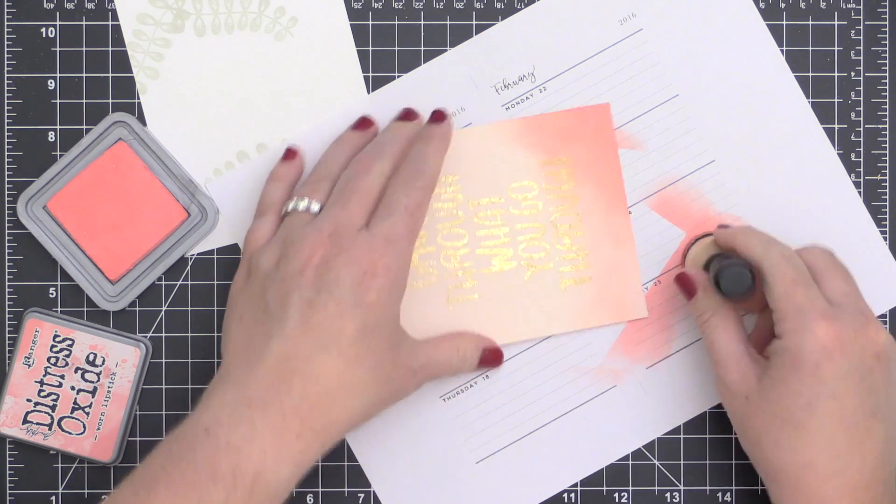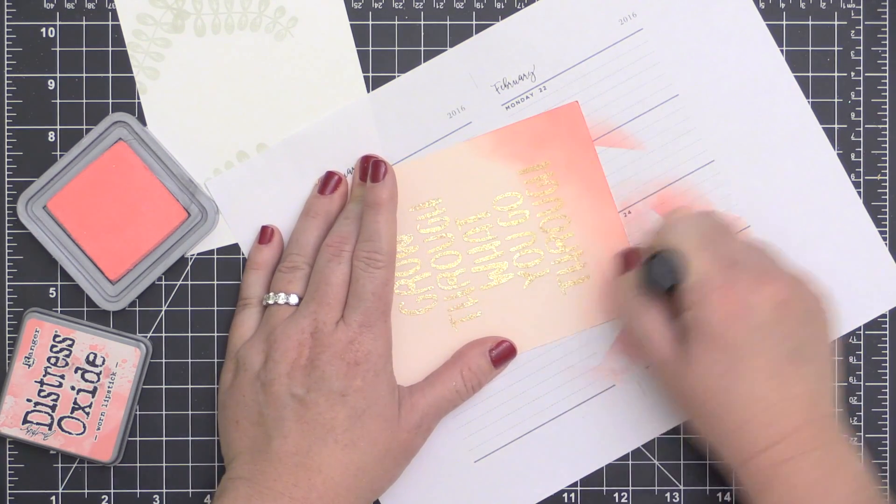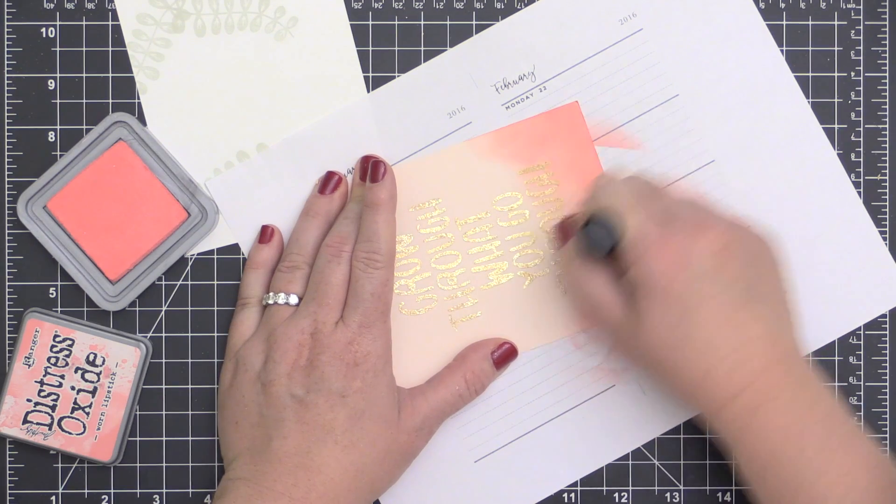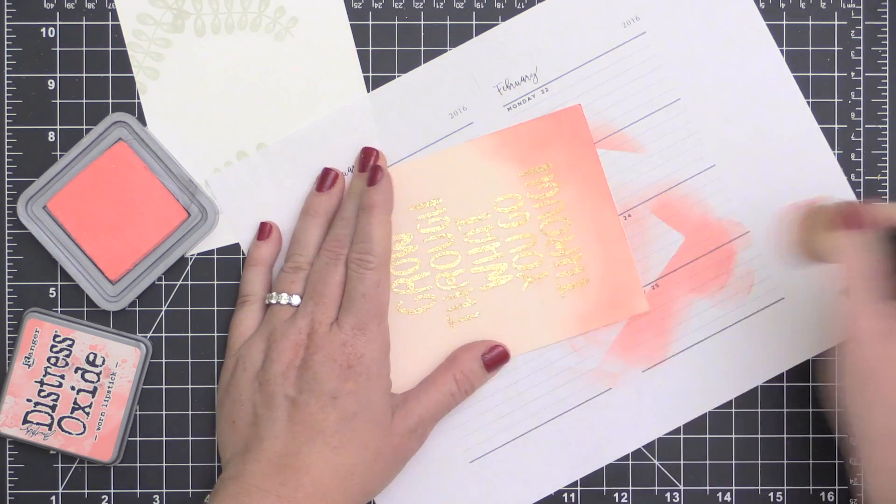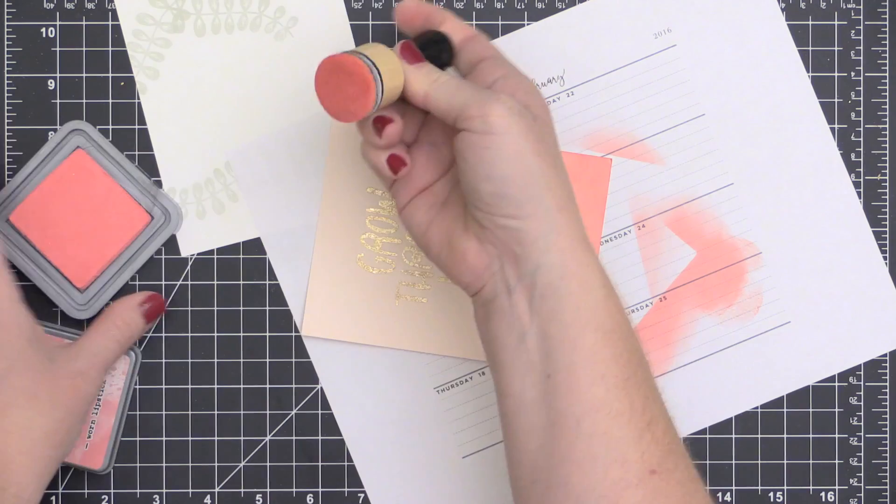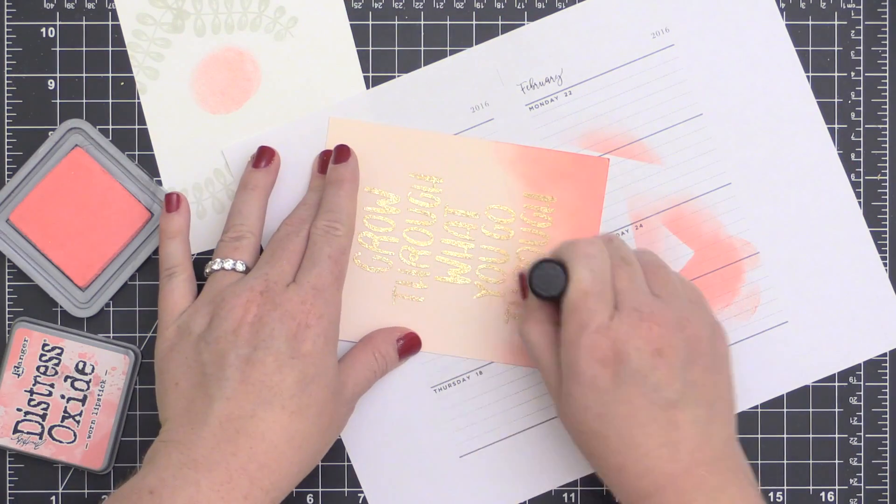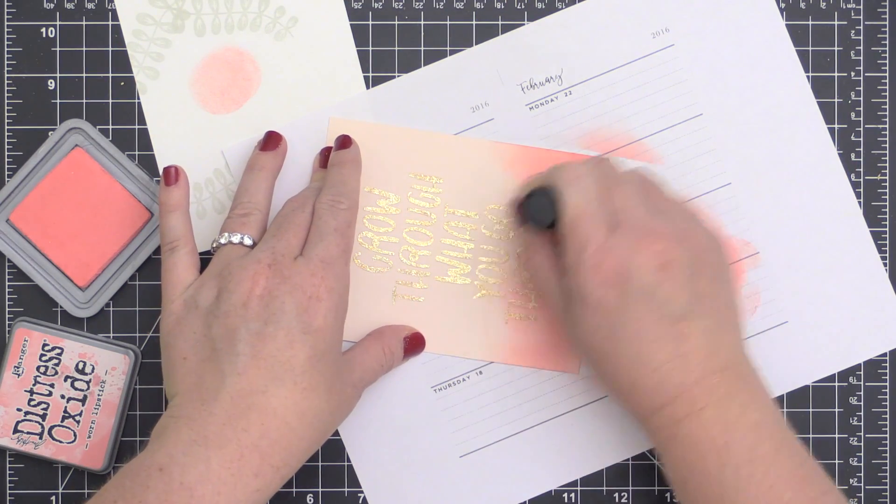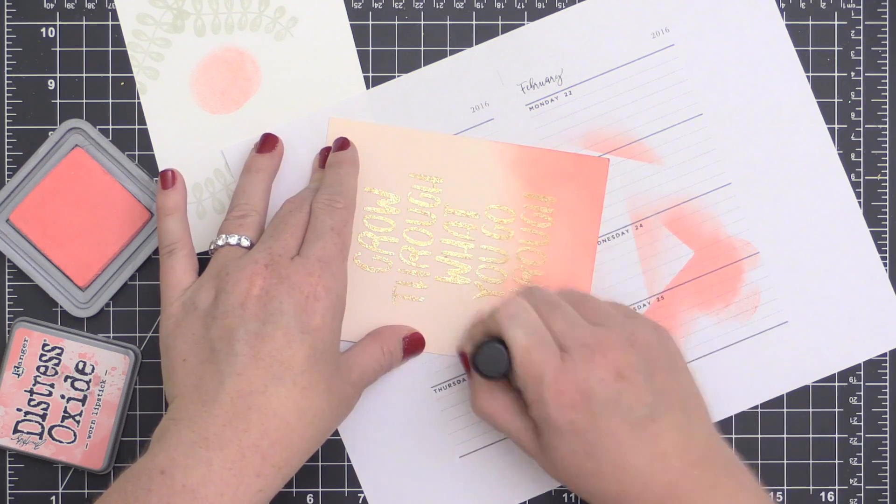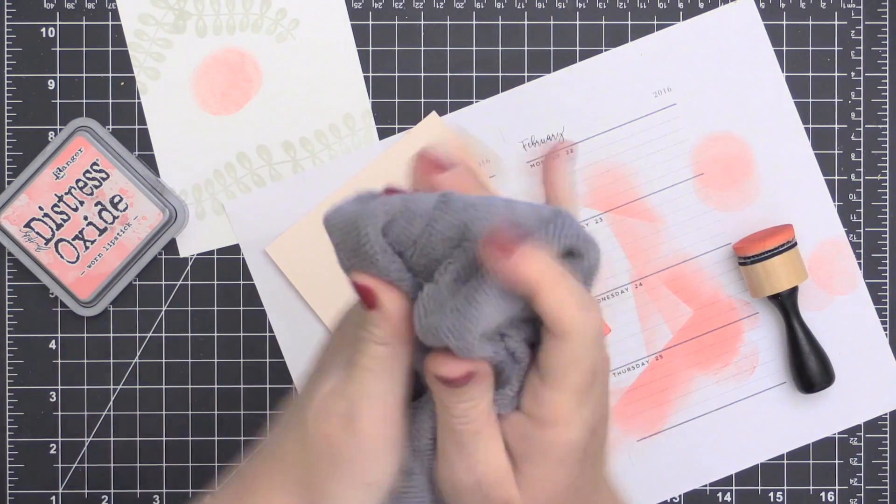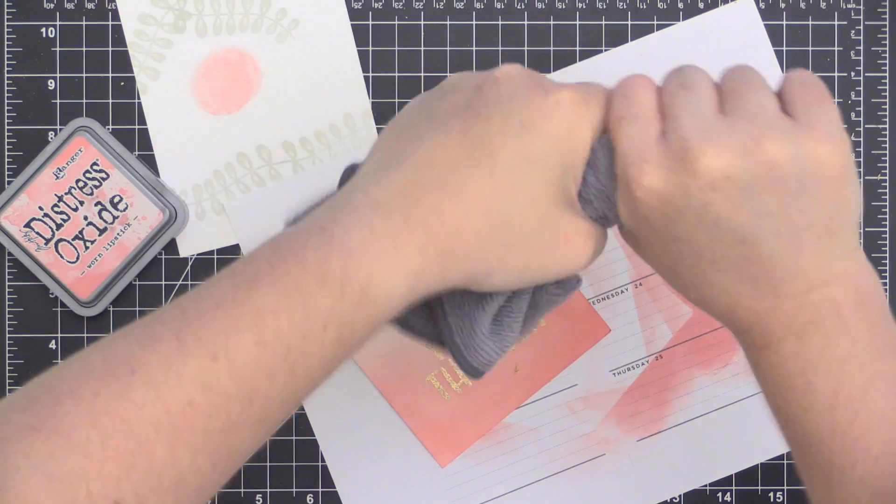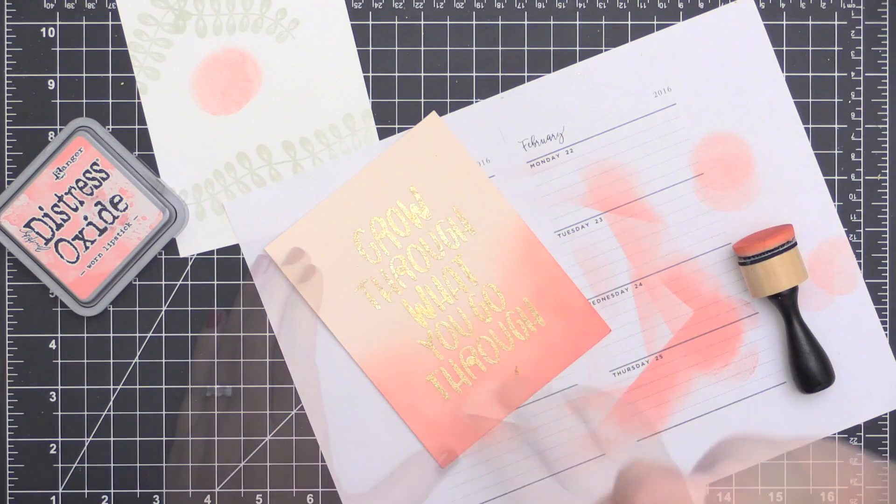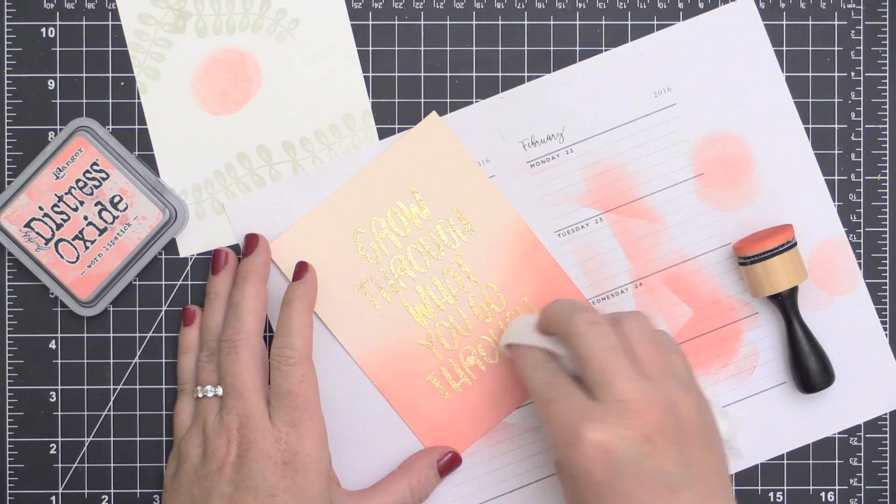It has a little bit different texture than the foiling that you would do with, say, a Minc machine and some toner sheets. It has a little bit of rise to it, a little bit of texture, and it's not quite as in your face as the foil, like super bright and shiny. It kind of almost has a little bit of a vintage feel or rustic, a little more rustic feel.